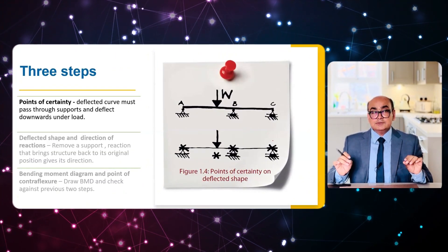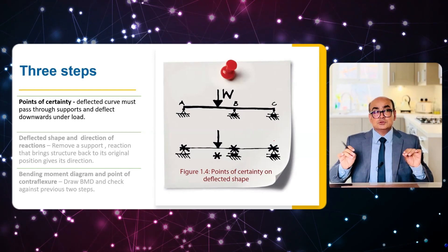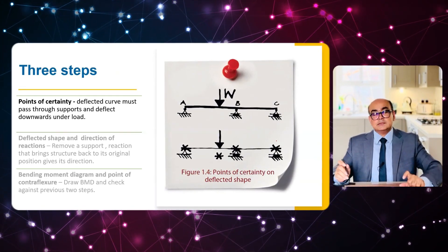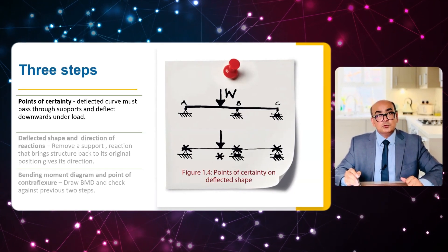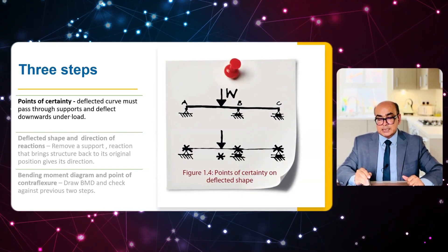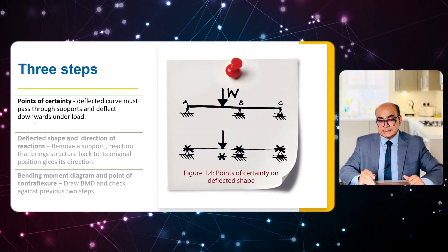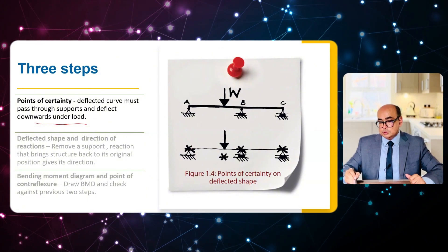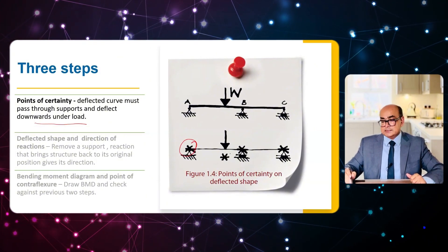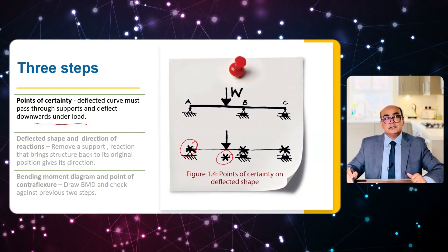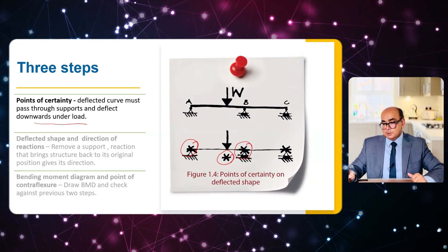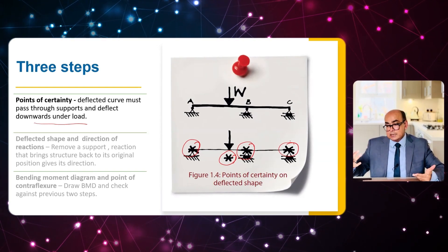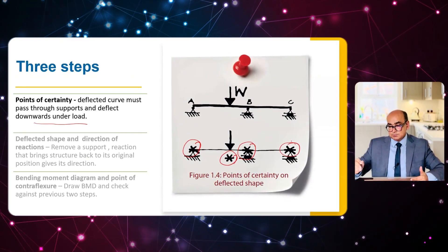I will follow three steps: find the direction of reactions, sketch the deflected shape, and draw the bending moment diagram. The first step is point of certainty — the deflected shape must pass through supports and deflect downwards under a load. The elastic curve should pass through these points of certainty at the supports and under the load.